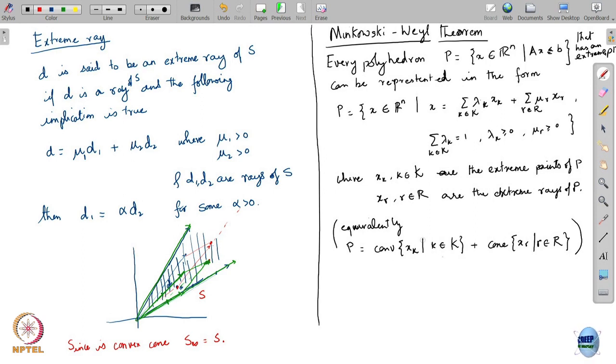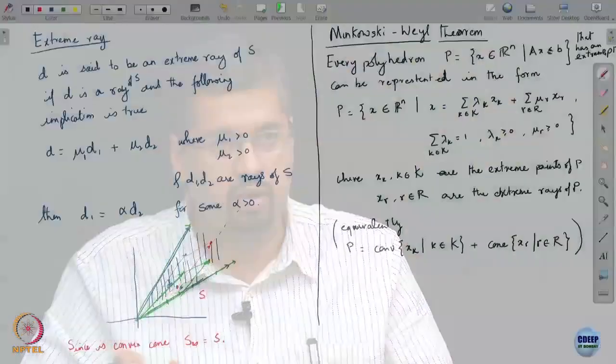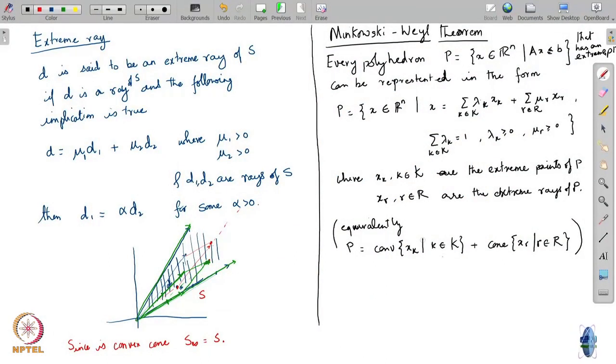Every polyhedron can be represented in this form. Equivalently, P equals the convex hull of points x_k, where k belongs to K, plus the cone generated by points x_r, where r belongs to R. So you take the convex hull formed by the extreme points of the set, look at the cone generated by the extreme rays of the set, and add the two together — that actually gives you back your polyhedron. This is true provided the set has at least one extreme point.